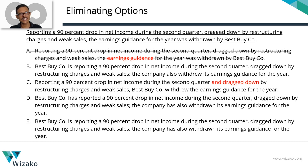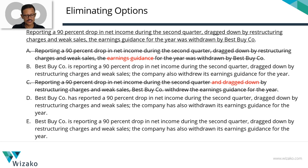That leaves us with three answer options: B, D, and E. The first difference I'm spotting is in the tense. In B and E, we have 'is reporting' (present progressive); in D, we have 'has reported' (present perfect).